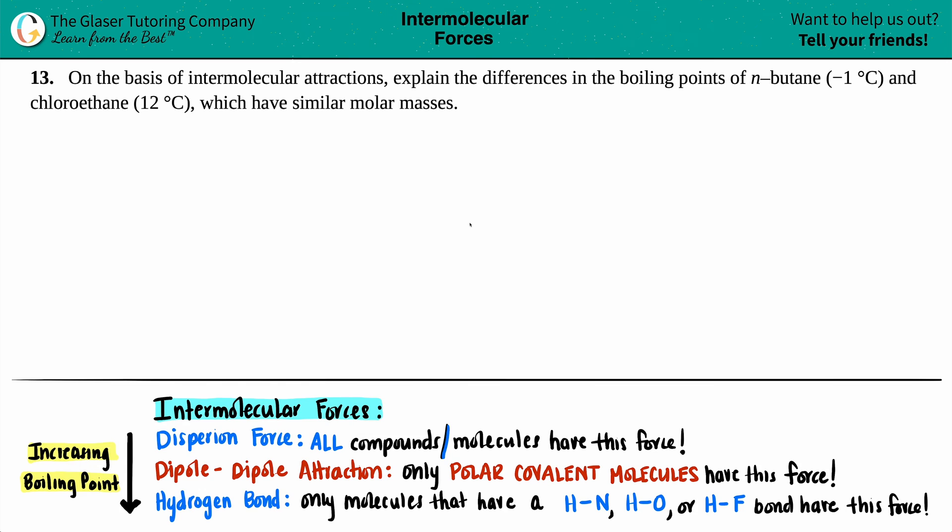Number 13. On the basis of intermolecular attractions, explain the differences in the boiling points of n-butane and chloroethane, which have similar molar masses. They tell us that n-butane has a boiling point of negative 1 degrees Celsius, while chloroethane has 12 degrees Celsius.